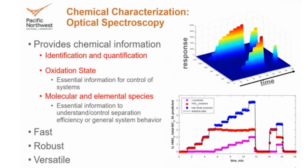To answer those types of chemistry questions, really one of the best tools we have is optical spectroscopy. It's all about taking a fiber optic out to your system, shining light into your system, and looking at how that light interacts with your system. This approach can give us a lot of chemical information, but it has a lot of other benefits as well — namely, it's fast, robust, and versatile.